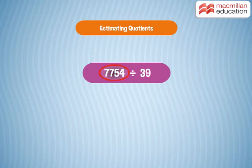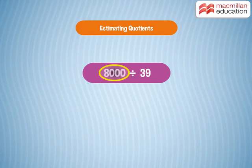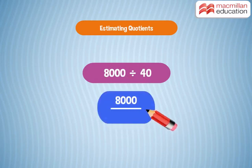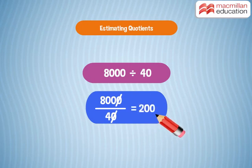Here is another example: 7,754 divided by 39. 7,754 becomes 8,000. What should 39 be? 40. So, what is 8,000 divided by 40? 200. Right!